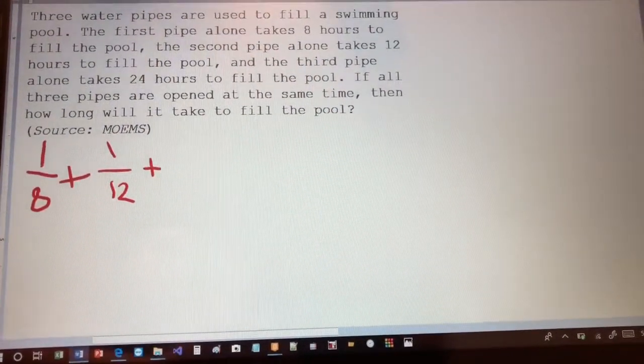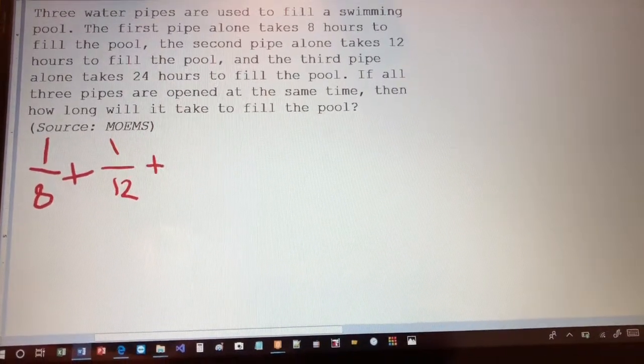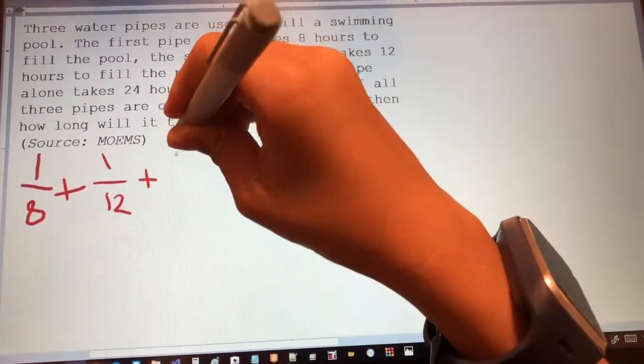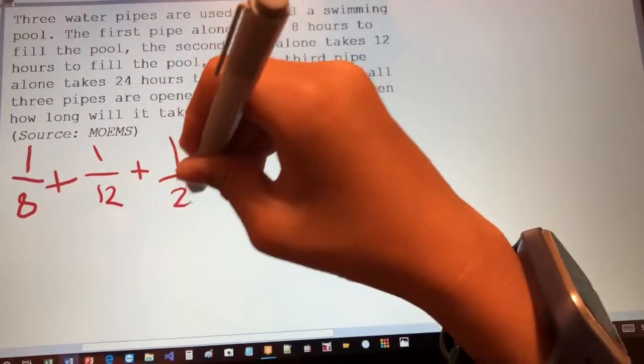And then it says the third pipe alone takes 24 hours to fill the pool. So that means in an hour, it fills a 24th of the pool.